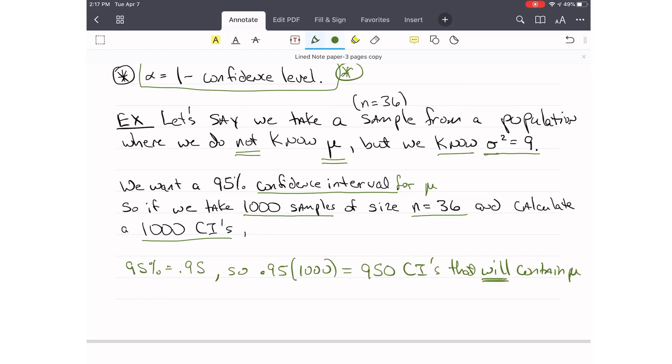So 0.95 times 1,000 equals 950 CIs that will contain mu. Now, 100% minus 95% equals 5%, which is 0.05, and this is equal to alpha, our significance level. So 0.05 times 1,000 equals 50 confidence intervals that will not contain mu.